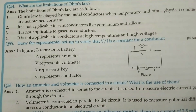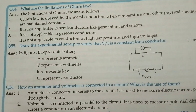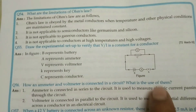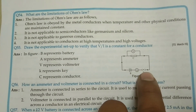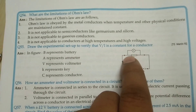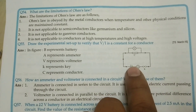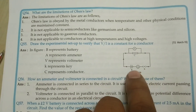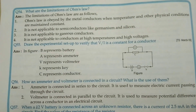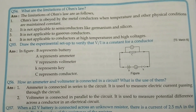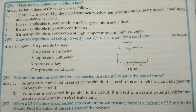One of the most important diagrams: Draw the experimental setup to verify that V/I is a constant for a conductor. This diagram consists of a battery (B), an ammeter (A) to measure current, a voltmeter (V), a key (K), and a conductor (C), maintaining potential difference across the conductor and showing direction of current flow. You need to draw this diagram, which is the most important diagram.